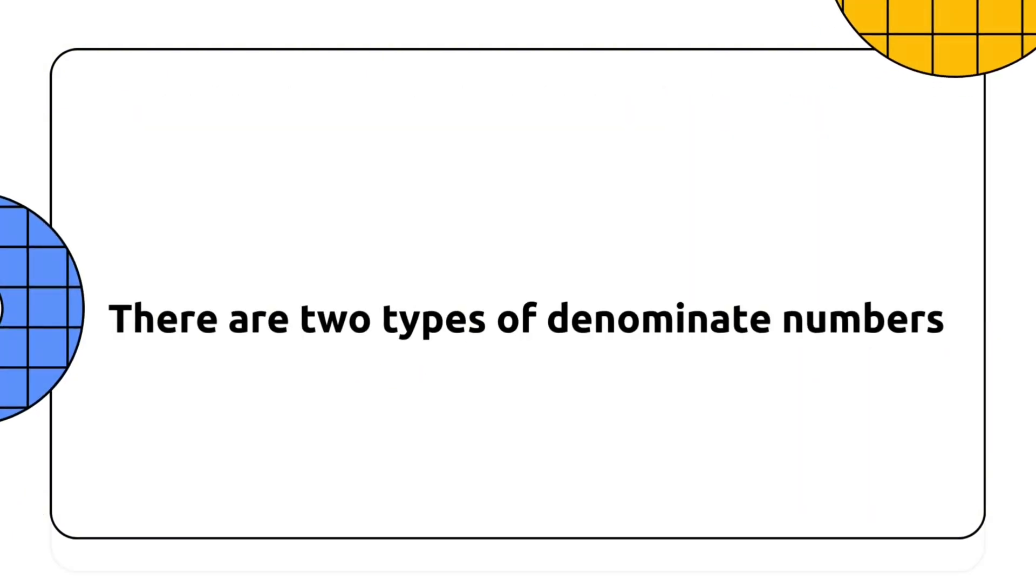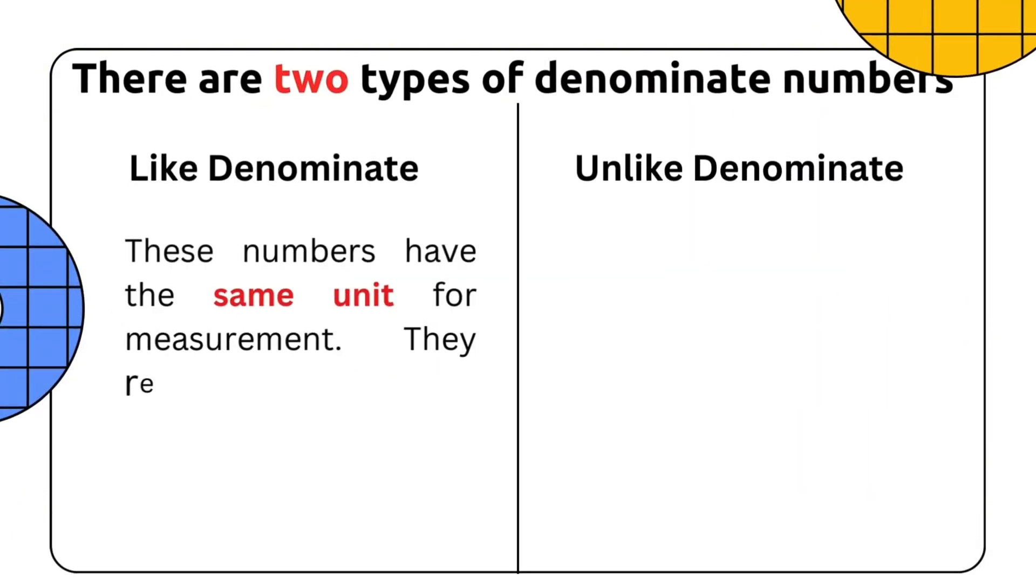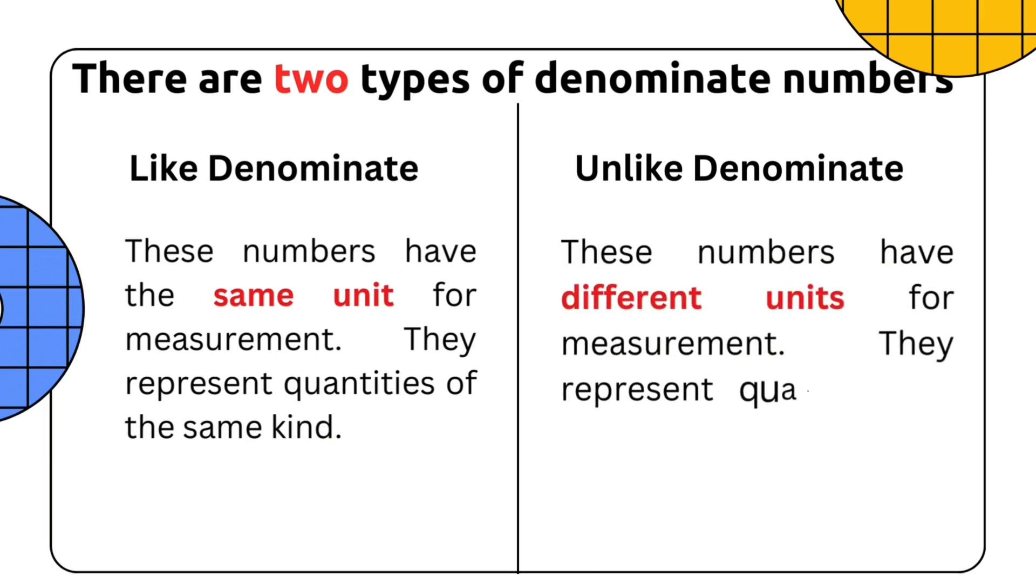There are two types of denominate numbers. Like denominate, these numbers have the same unit for measurement. They represent quantities of the same kind. Unlike denominate, these numbers have different units for measurement. They represent quantities of different kinds.